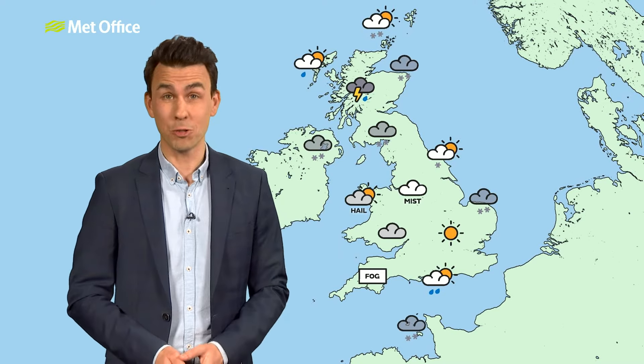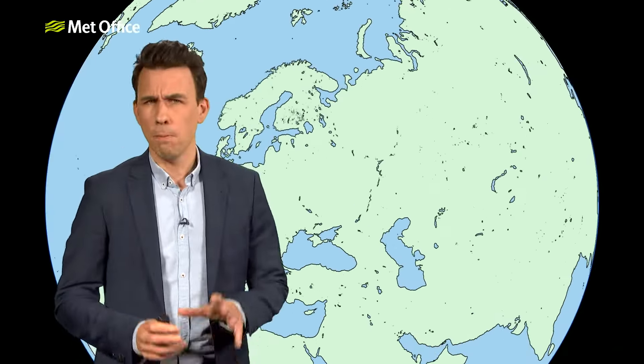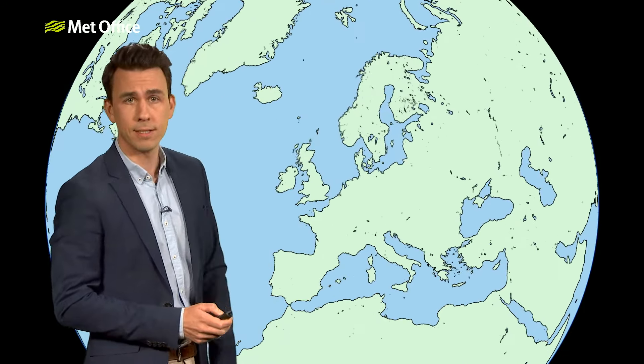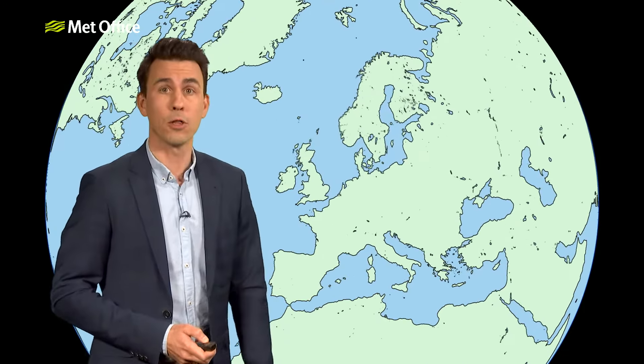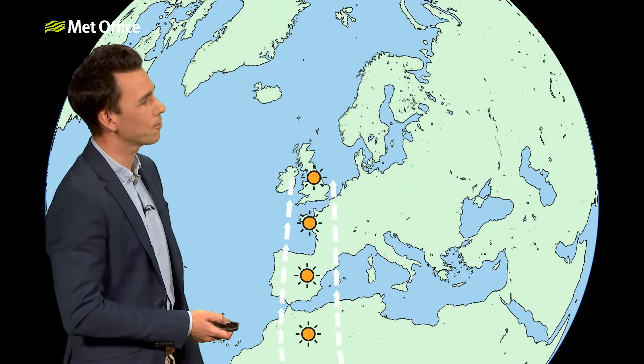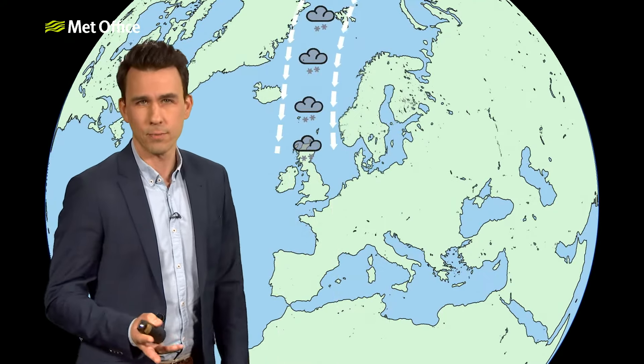The UK's weather is notoriously fickle. We are surrounded by so many different influences: a large ocean to the west, a continent to the east. Midsummer heat can originate in North Africa, and in the winter the north wind doth blow and we shall have snow, at least some of the time.